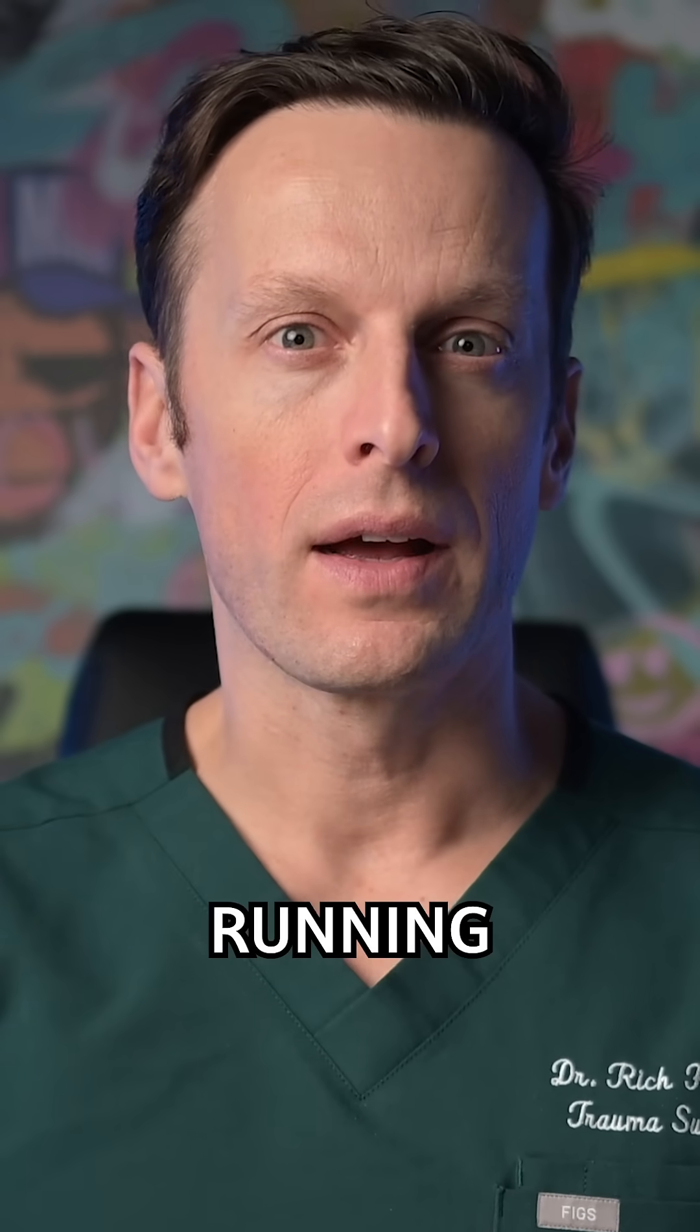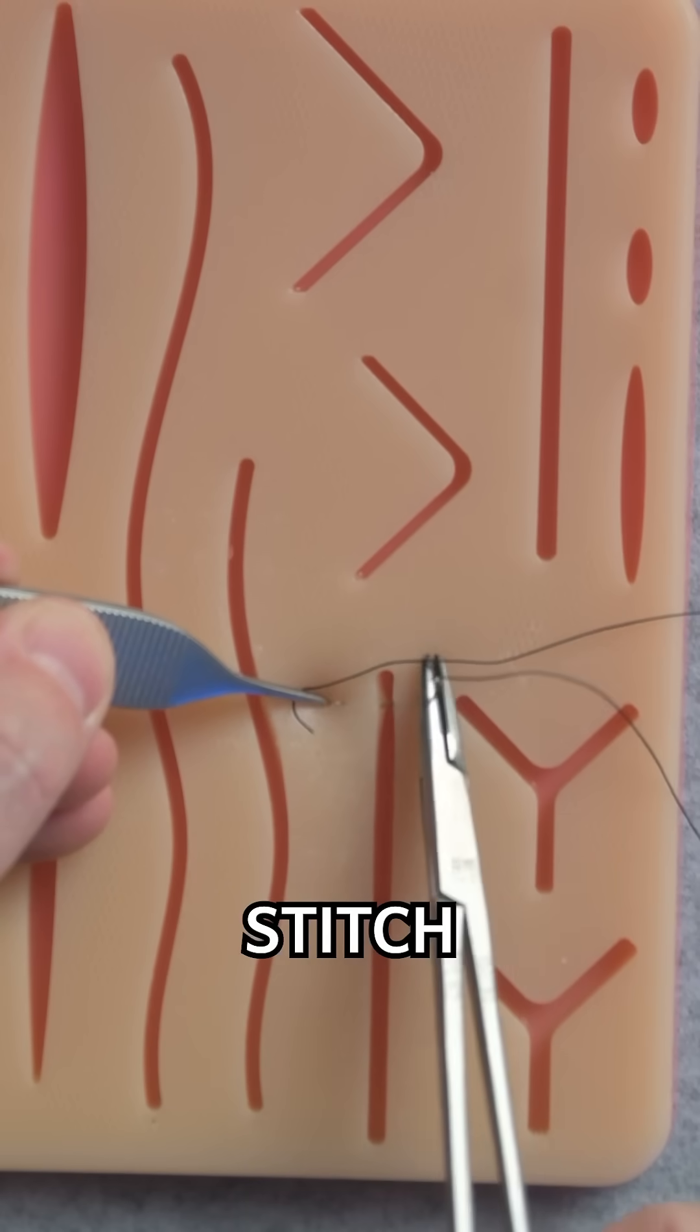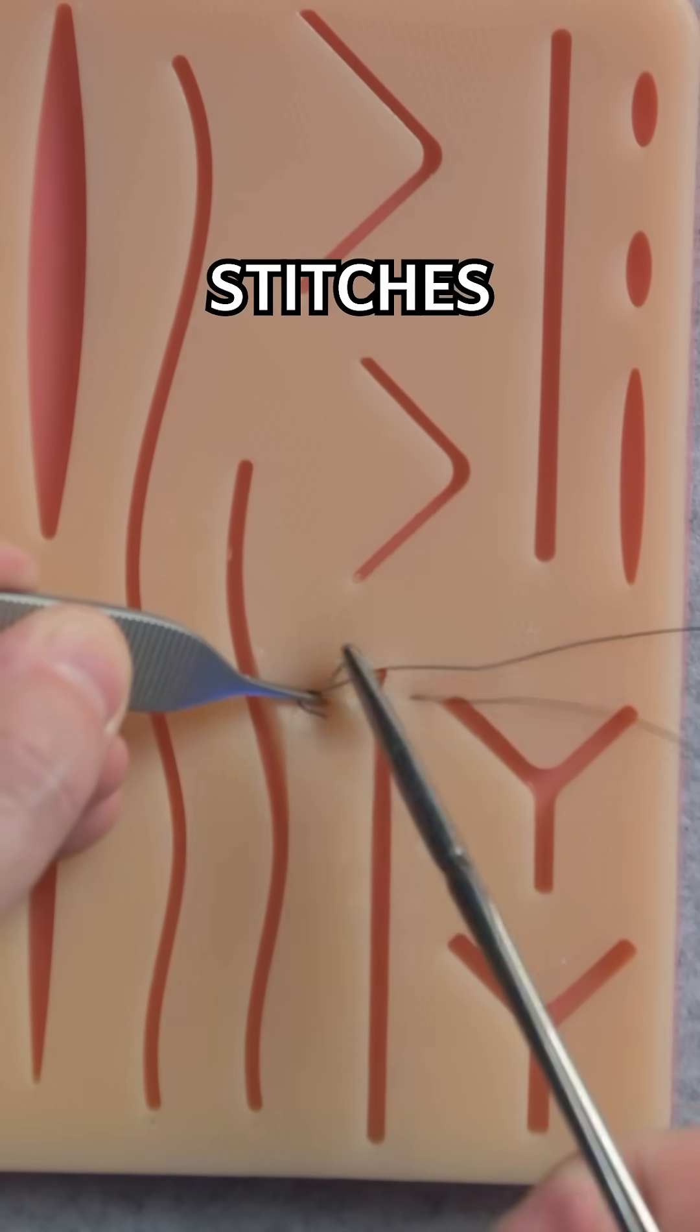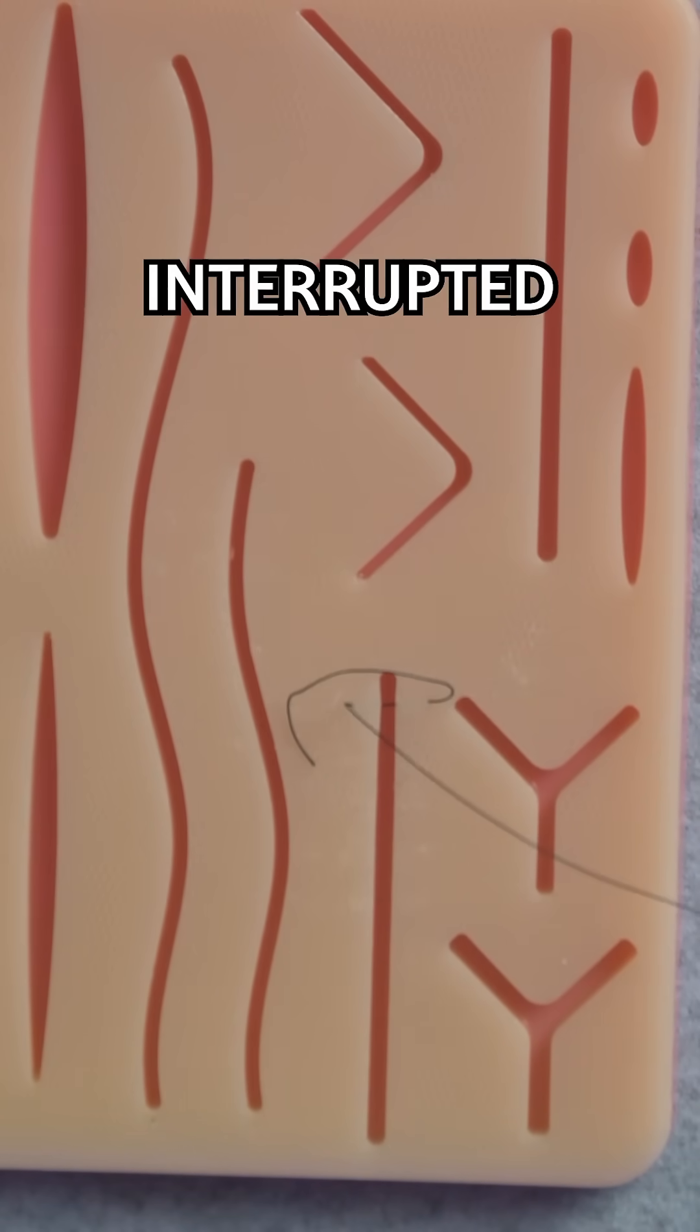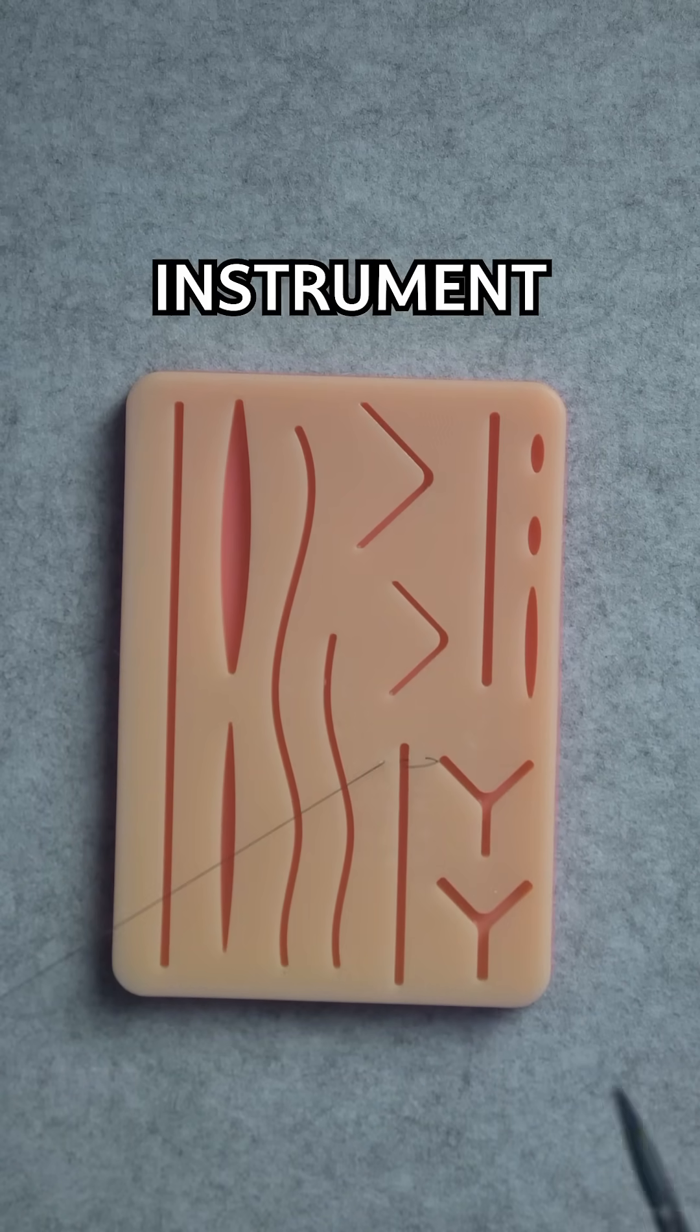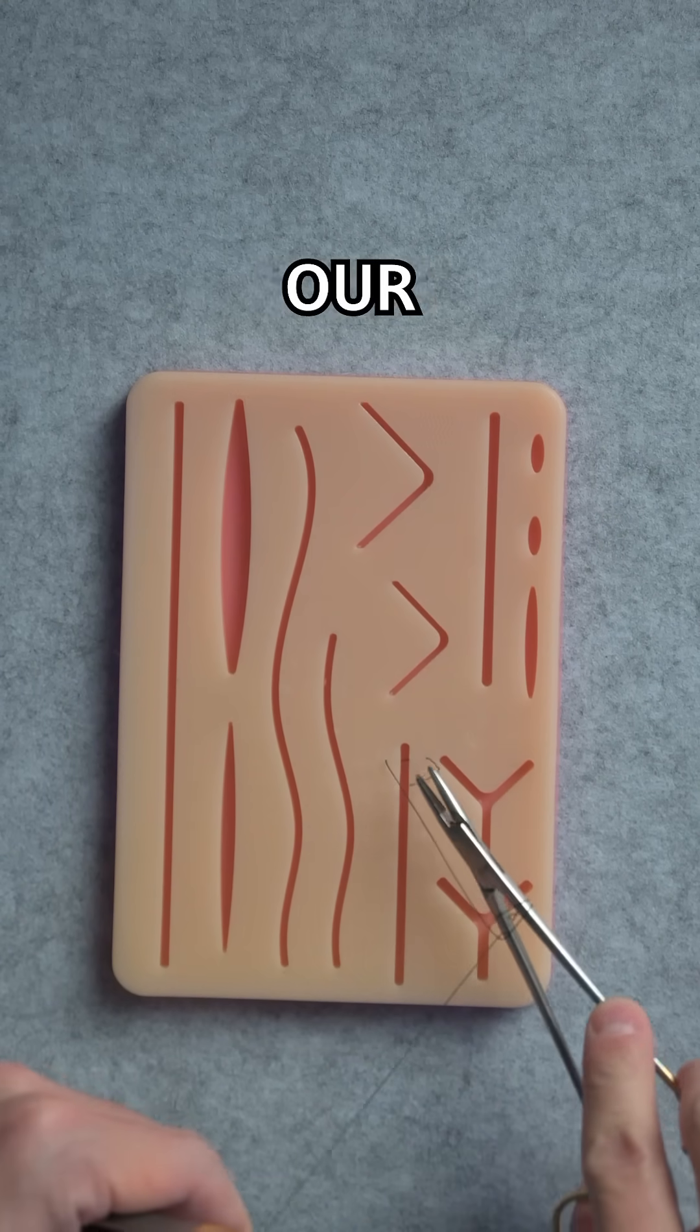Today we're learning the running locking stitch. We start like all of our stitches with a simple interrupted stitch technique. We do our basic instrument tie to start our stitch.